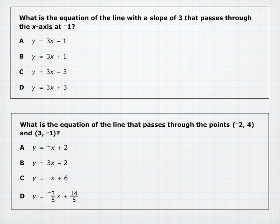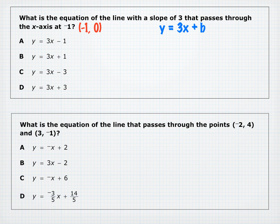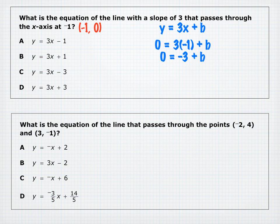What is the equation of a line with slope 3 that passes through the X-axis at negative 1? The X-intercept at negative 1 means the point is (negative 1, 0). Plug into Y equals 3X plus B: 0 equals 3 times negative 1 plus B, giving 0 equals negative 3 plus B, so B equals 3. All answer choices have slope 3, but only D has Y-intercept positive 3.